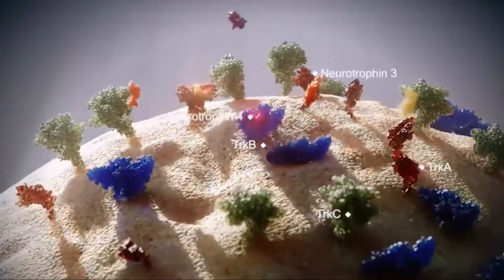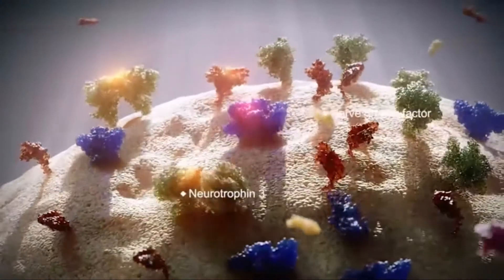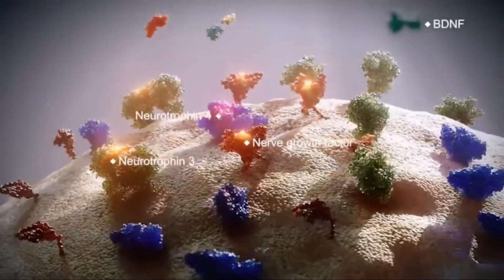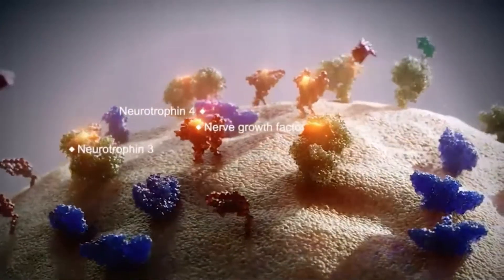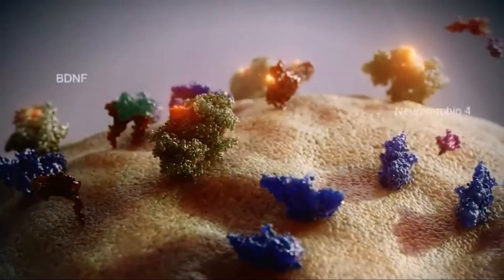Each of these proteins can bind one or more of four chemical messengers called neurotrophins. The receptors then pair up, which results in activation of the functional part of the receptor inside the cell, called the kinase domain.